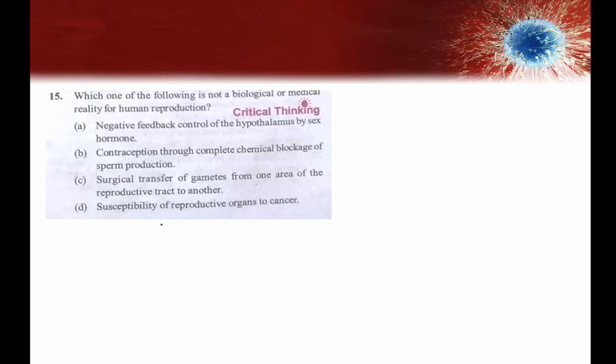Option A: negative feedback control of the hypothalamus by sex hormones — 100% correct. Testosterone, inhibin, progesterone, and estrogen have a negative effect on pituitary secretion of gonadotropins FSH and LH. Option B: contraception through complete chemical blockage of sperm production.